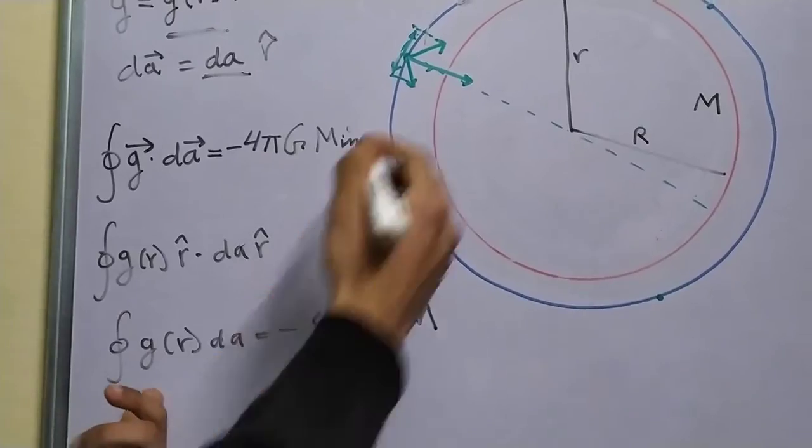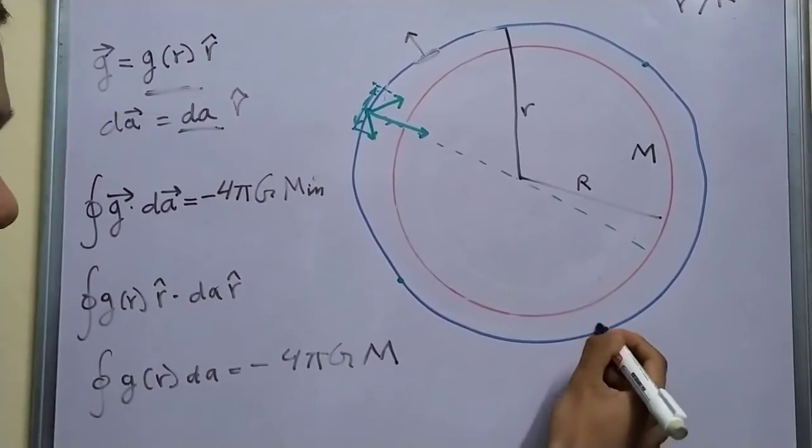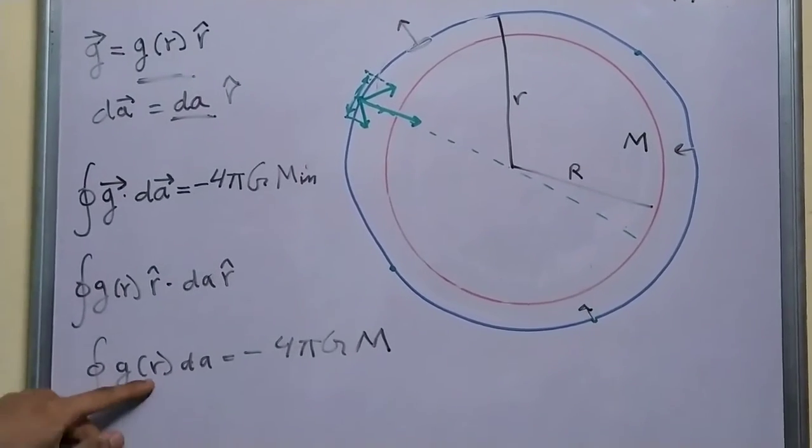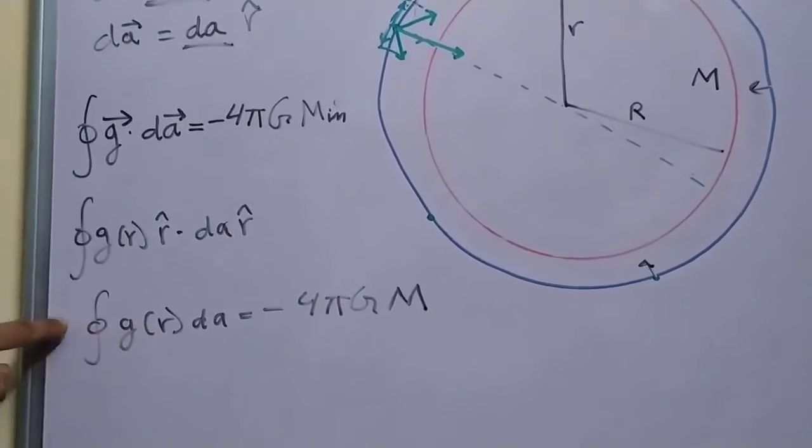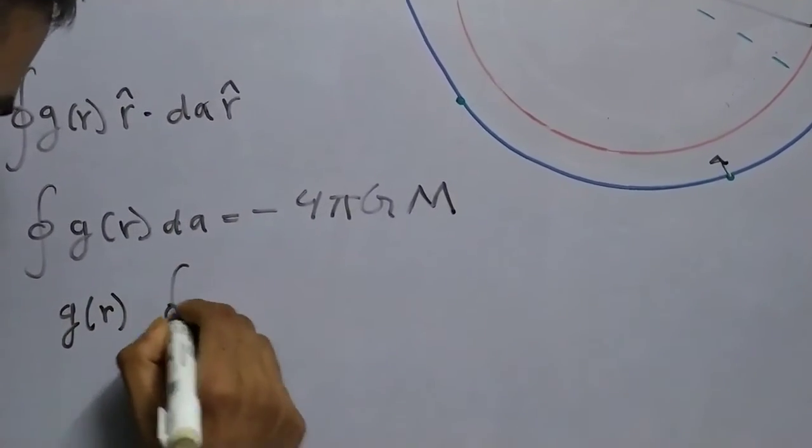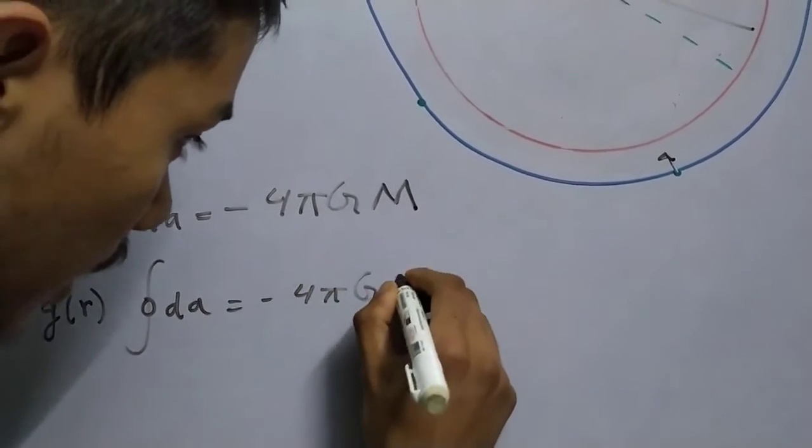Now since this is constant over this surface, G of R is constant over this surface, the magnitude is same in this direction and this direction as well. We can pull G of R out of our integration, so G of R integral dA equal to minus 4 pi G M.